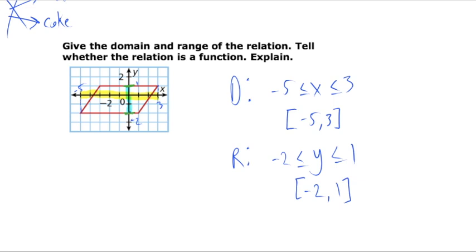We can confirm that the endpoints at y = -2 and y = 1 are included within the range, as there are points at those locations along the graph. Now, if we draw a vertical line and drag it across the graph, we want to see if there are any points where that vertical line would touch the graph more than once. At one location, the vertical line touches the graph here and also here — two separate points. Because we have those two points for a single x value, this graph is also not a function.